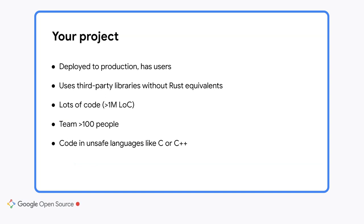So, you want to use Rust. The usual advice is to rewrite your current project in Rust. Let's see what your current project is like. It is probably deployed in production. It depends on libraries that are not available in Rust. The project has a lot of code, possibly millions of lines. Your team is pretty large, maybe 50 or even 100 people, and the code is written in unsafe languages like C or C++.